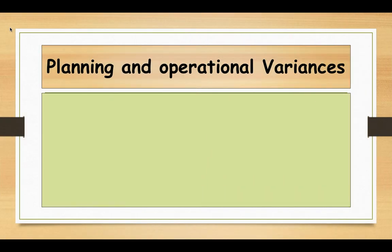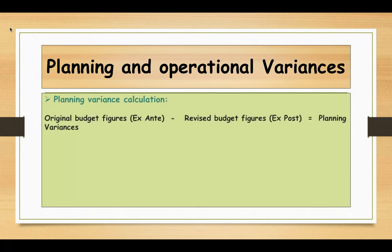Now we will see how to calculate the planning and operational variances. Planning variances mean there was a mistake in the original plan. We need to compare the figures of the original plan — that is called ex-ante — with the revised budget figures. So the planning variance is the difference between the original budget figures (ex-ante) and the revised budget figures (ex-post).